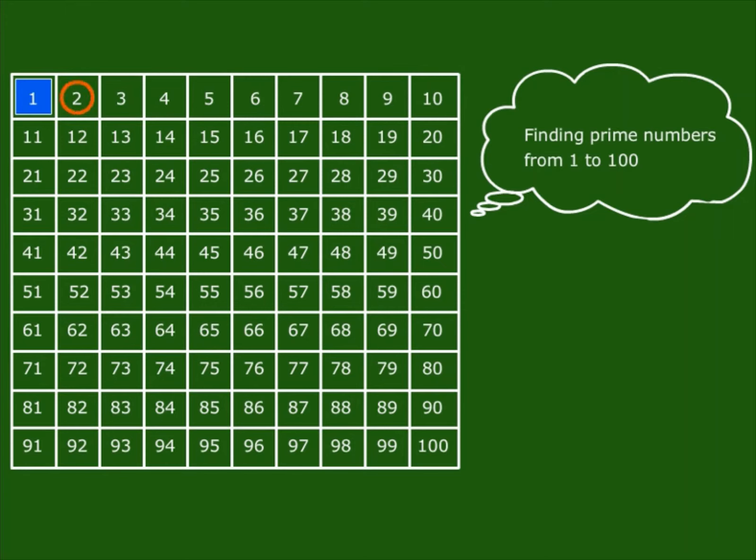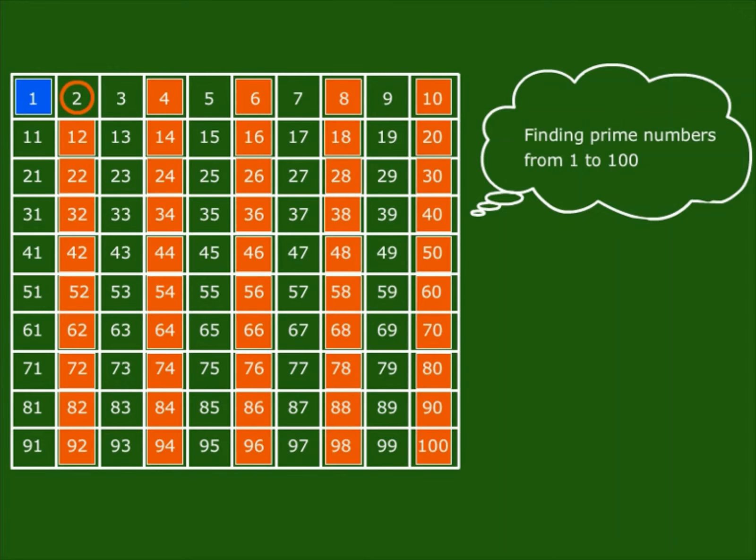Circle two and cross all the multiples of two: that is four, six, eight, ten, twelve, fourteen, etc.